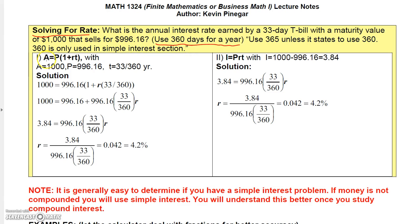Now, if I go to this formula, A equals P times 1 plus RT, then I know the amount that I want it to grow to is $1,000. I know that my principle is 996.16. I know that my time is 33 out of 360. And then I have 1 plus RT in here. So it's 1 plus R times 33 over 360. And I'm trying to solve for R.